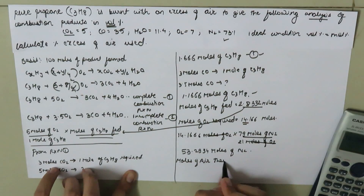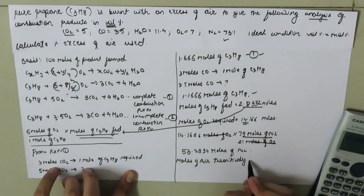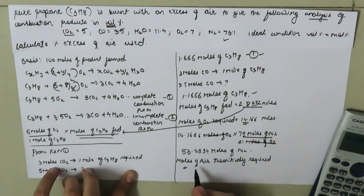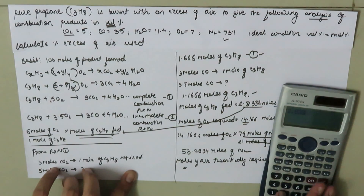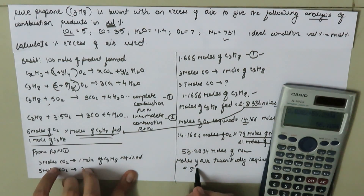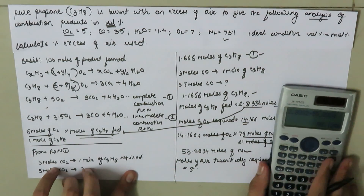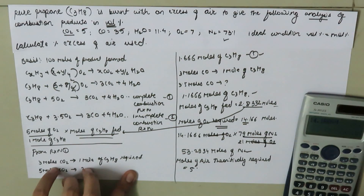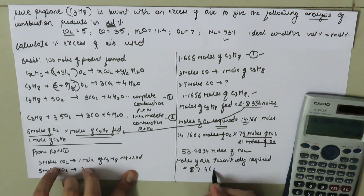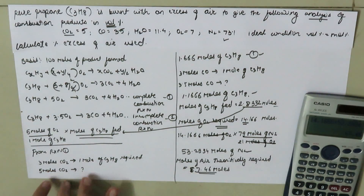The moles of air theoretically required equals moles of oxygen plus moles of nitrogen: 14.1666 + 53.2934 = 67.46 moles of theoretical air.